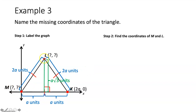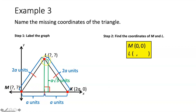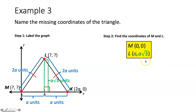Now we can find the missing coordinates. Point M is at the origin: zero comma zero. Point L is the harder one — its X coordinate is A units along the X axis, and the height from the X axis to point L is A rad 3 units. So point L is at A comma A rad 3, and we've found the missing coordinates.